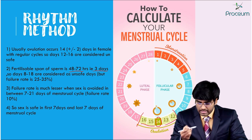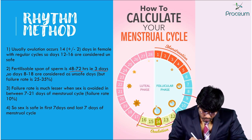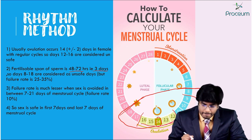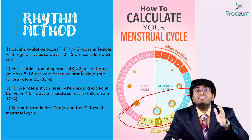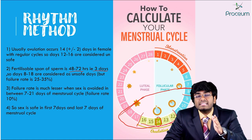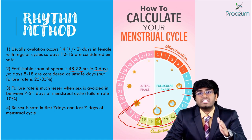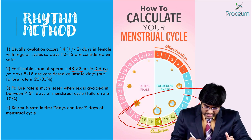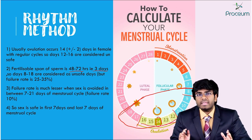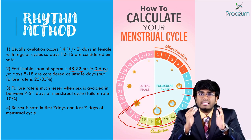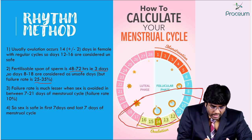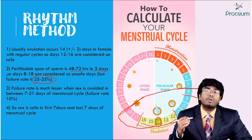According to this, days 8 to 18 are considered as unsafe days. If the female participates in intercourse during this duration, there is a high chance that the ovum can be fertilized and she can get pregnant. So these days are avoided for intercourse. However, when a couple follows this rule, there is still a failure rate of almost 25 to 35 percent.